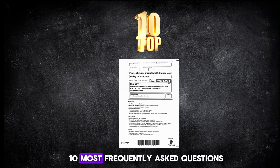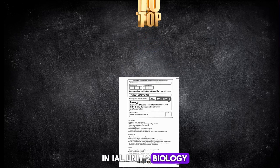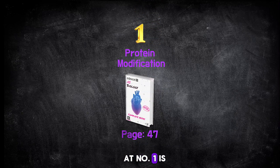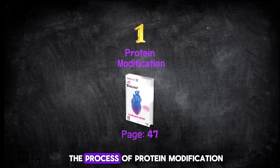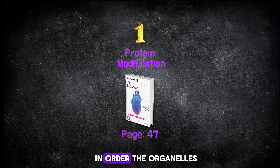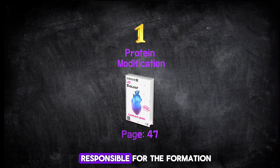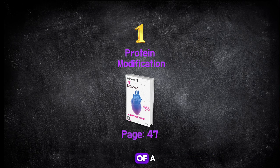Here are the top 10 most frequently asked questions in IB Unit 2 Biology. At number one is the process of protein modification or protein trafficking. Learn in order the organelles and the processes responsible for the formation of a protein.